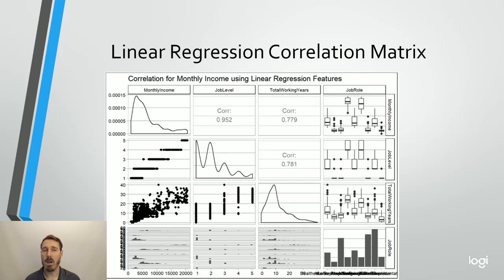The linear regression correlation matrix for the monthly salaries, however, tells me a lot. So this is telling me monthly income is 95% correlated with job level and 78% correlated with total working years. The job role is a little bit harder to read there. You've got those two high ones are probably your research directors and the manufacturing director and those low levels are probably our level one employees.